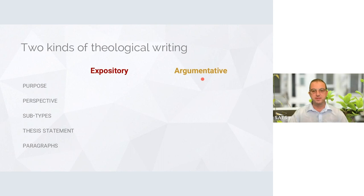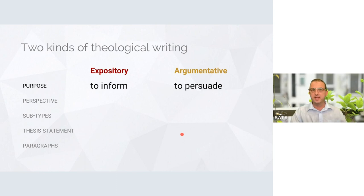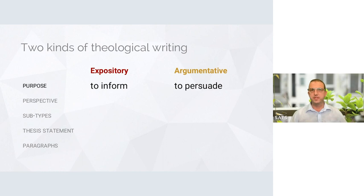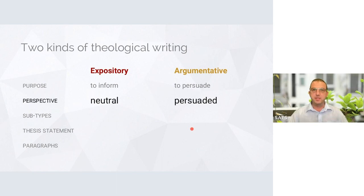They are different in terms of their purposes. The purpose of an expository essay is to inform the audience about a topic — typically one that is not particularly controversial. The idea is to be informative, to help you understand something; textbooks would typically be informative writing. By contrast, the purpose of argumentative writing is to persuade — to convince the reader that a particular solution to a specific problem is coherent, convincing, and the best option.